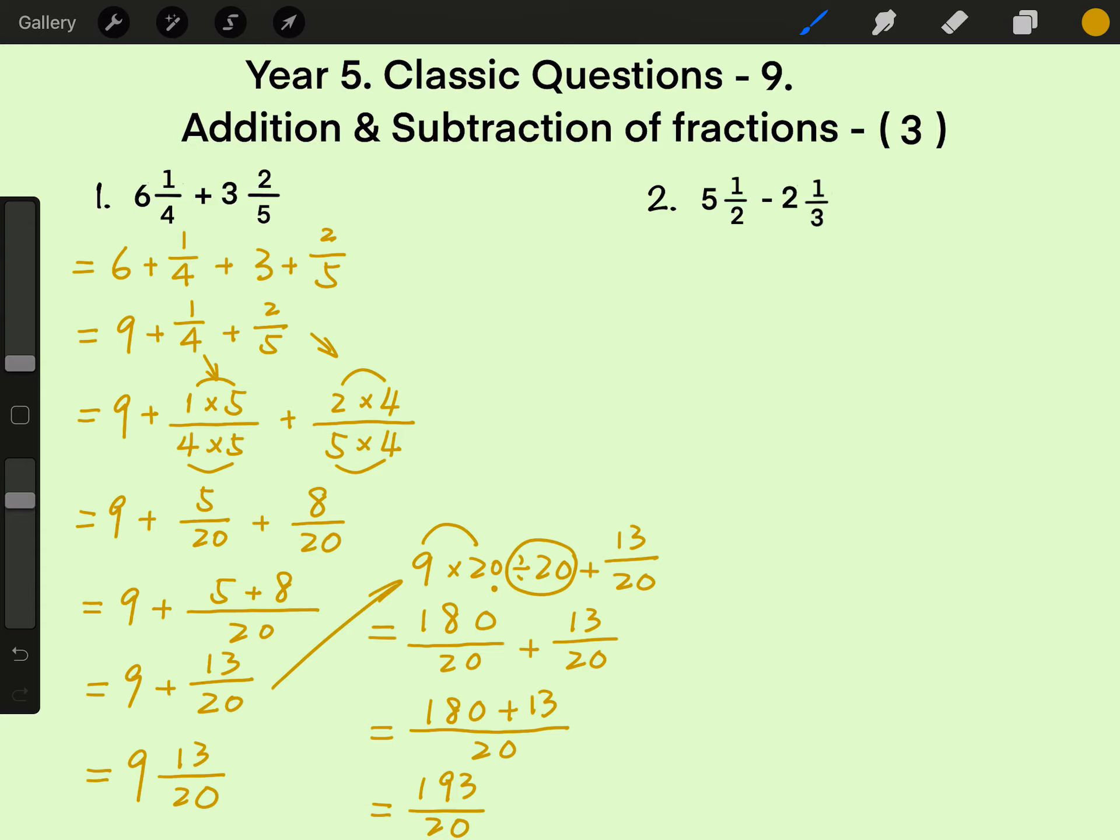Question 2: 5 and a half minus 2 and 1 third. Still, denominators are different.